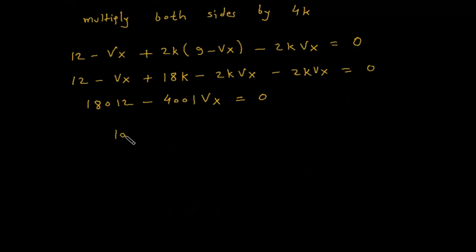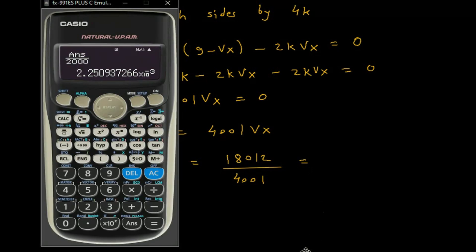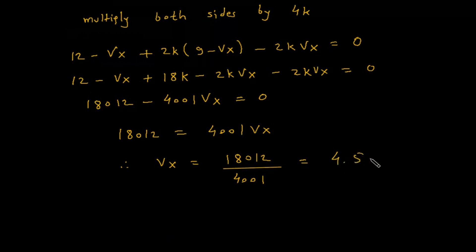So 18012 is equal to 4001*Vx. Therefore Vx is equal to 18012 / 4001.